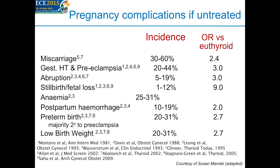Looking at pregnancy complications if overt hypothyroidism is untreated: important complications include miscarriage, stillbirth, and preterm birth, all with significant incidence if overt hypothyroidism is not treated. The odds ratios versus euthyroid women indicate that if we don't treat overt hypothyroidism in pregnancy, there are significant effects on pregnancy outcomes.